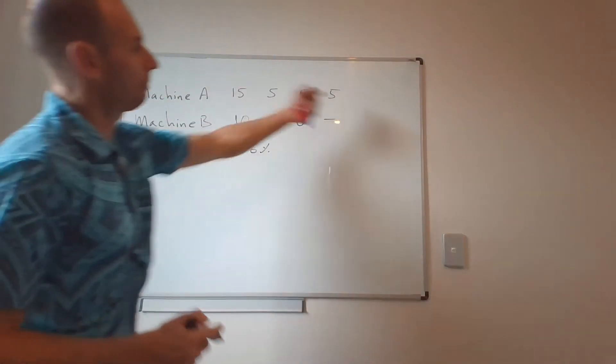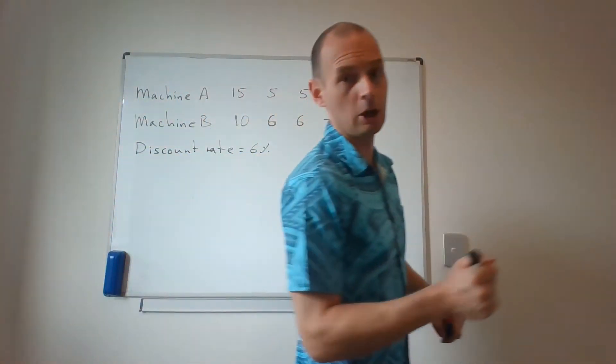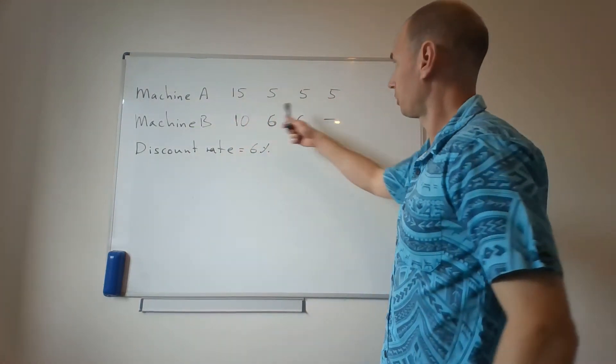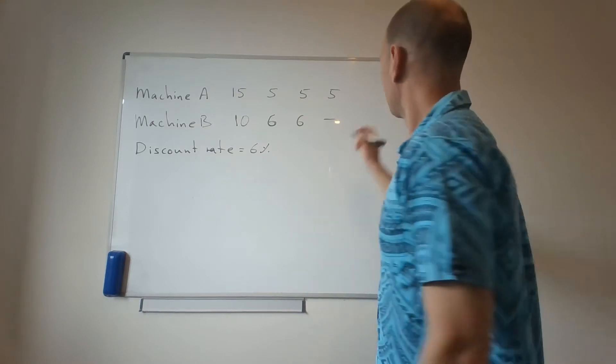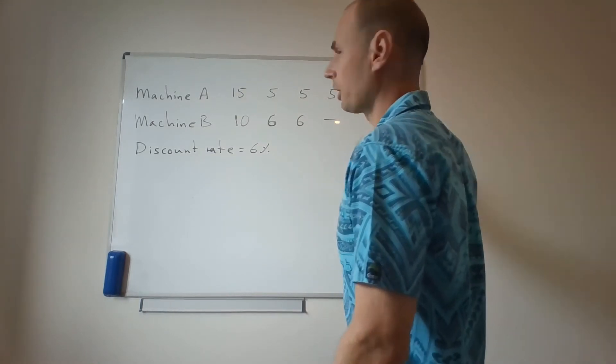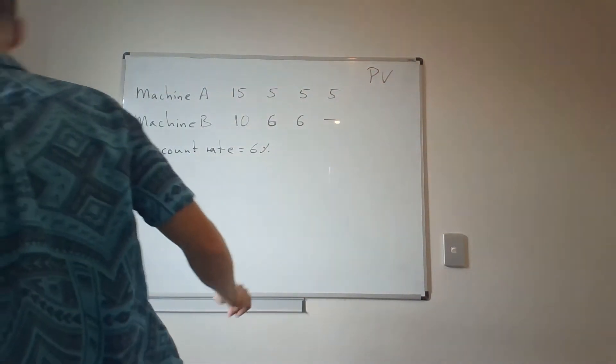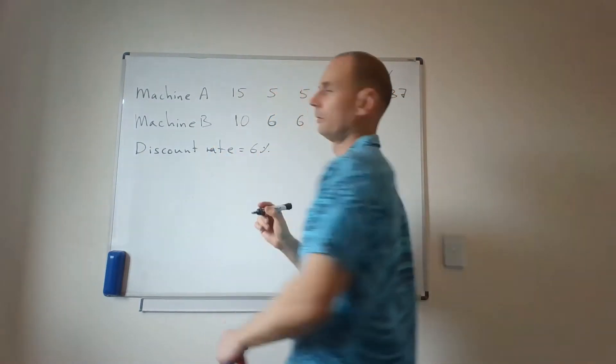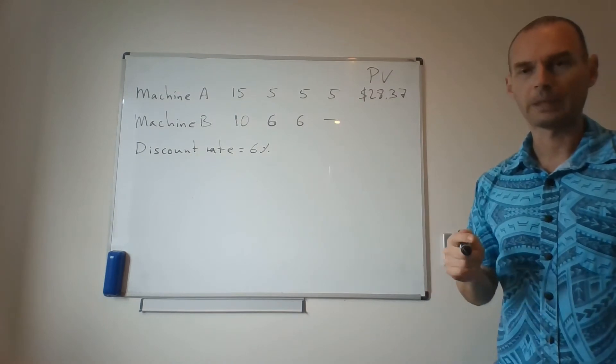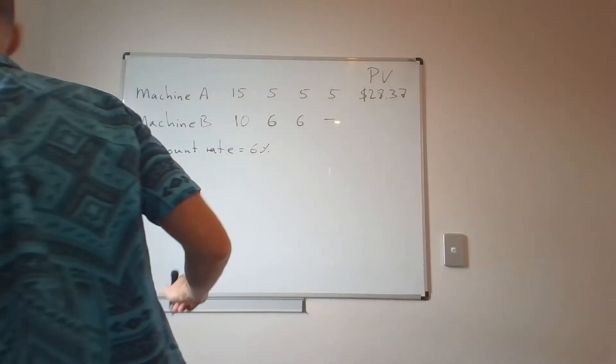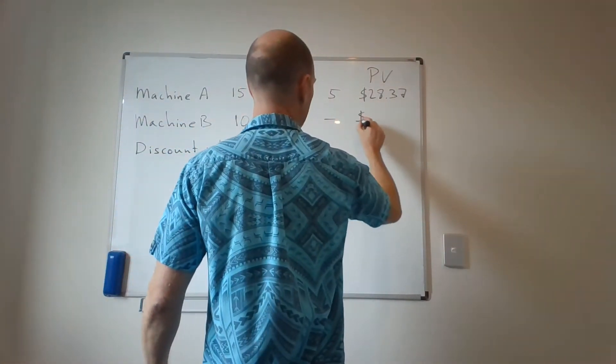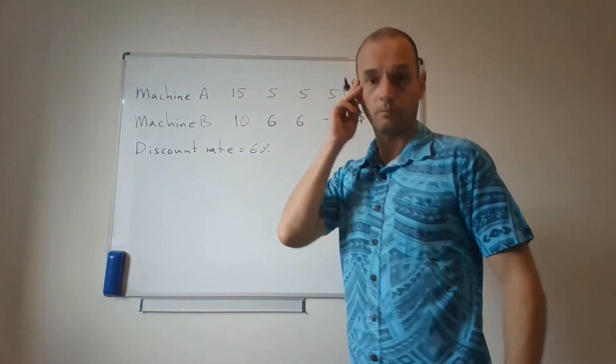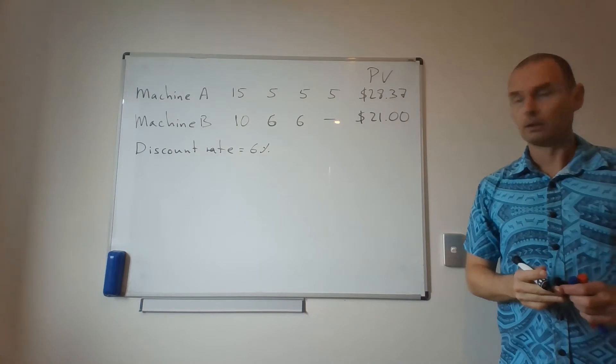If we sum up all the costs that are associated with purchase and servicing of Machine A, the present value of the costs will be $28,370. And for Machine B, it's $21,000 exactly.